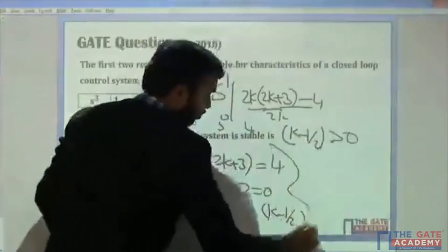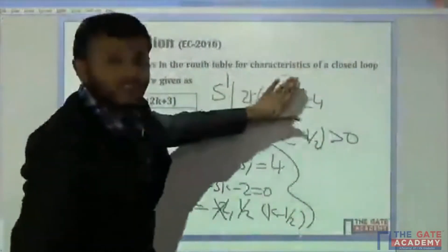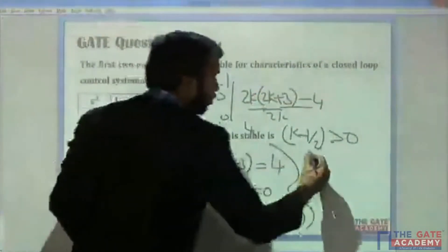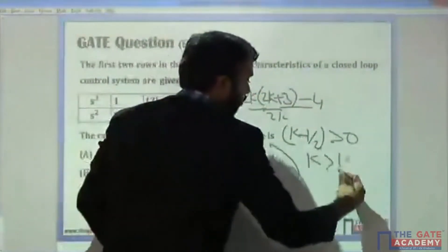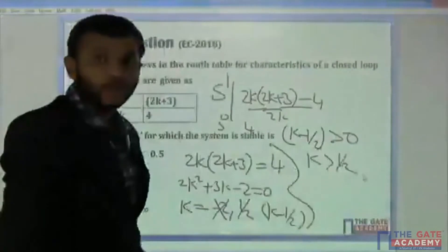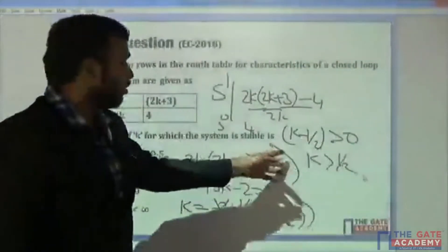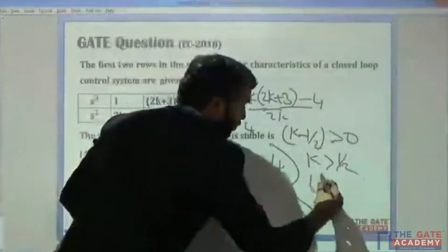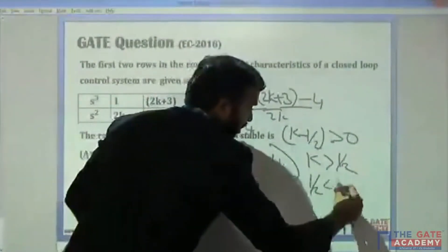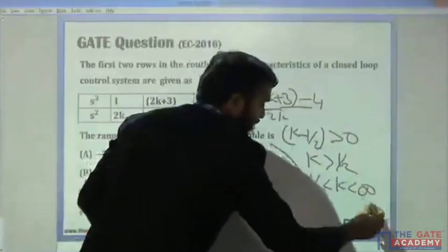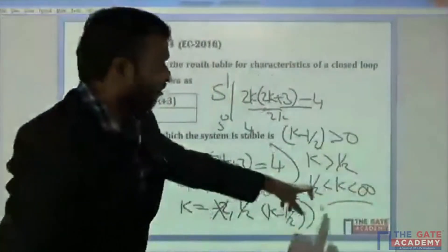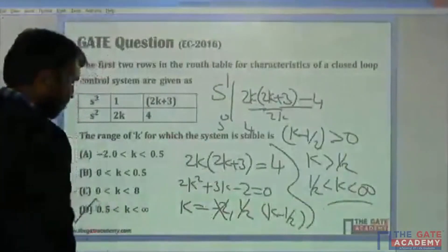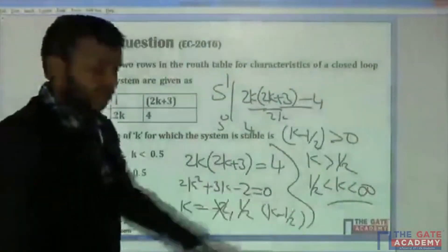This coefficient in the s^1 row should be greater than 0 for the system to be stable. That means K should be greater than 1/2. So the range of K is 1/2 < K < ∞ for which the system is always stable. Option D is the only answer that satisfies this.